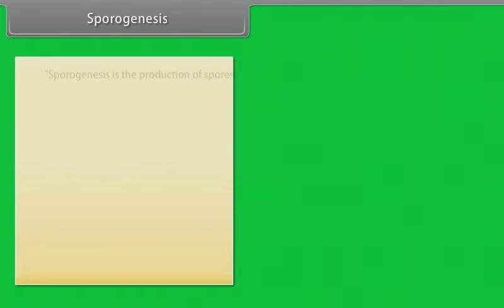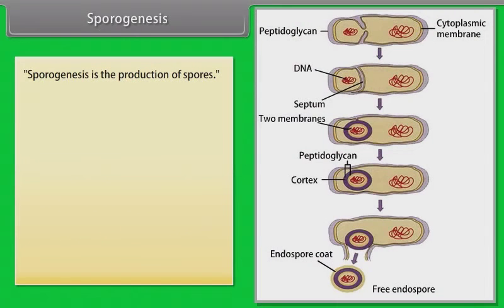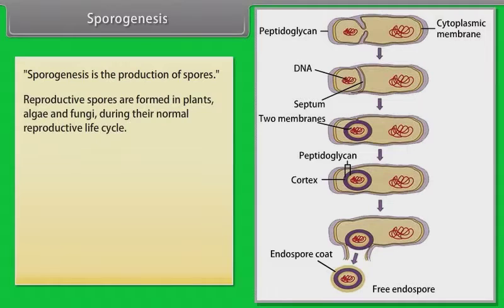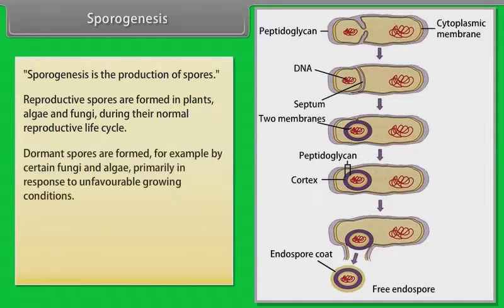Sporogenesis is the production of spores. Reproductive spores are formed in plants, algae and fungi during their normal reproductive life cycle. Dormant spores are formed, for example by certain fungi and algae, primarily in response to unfavorable growing conditions.